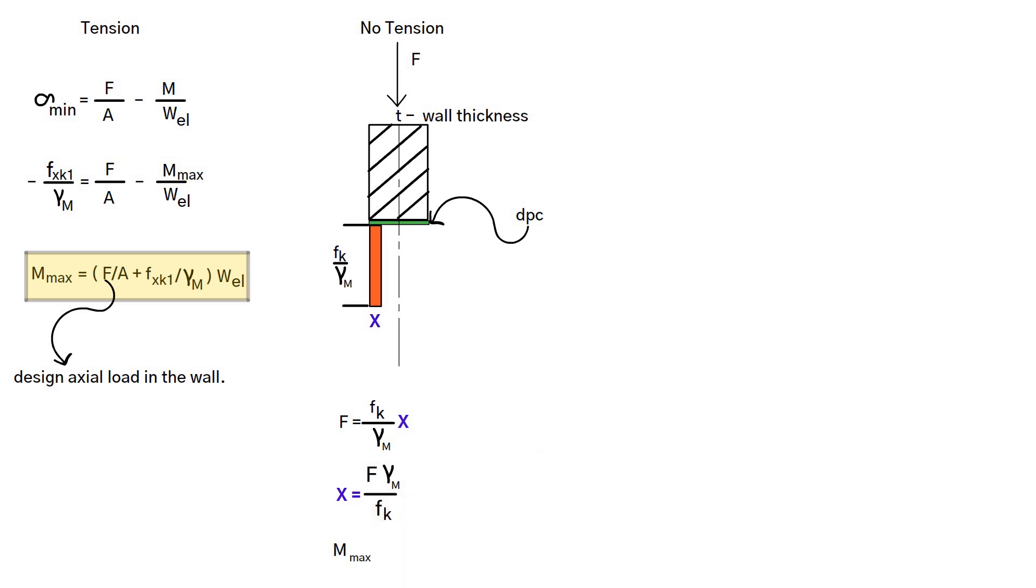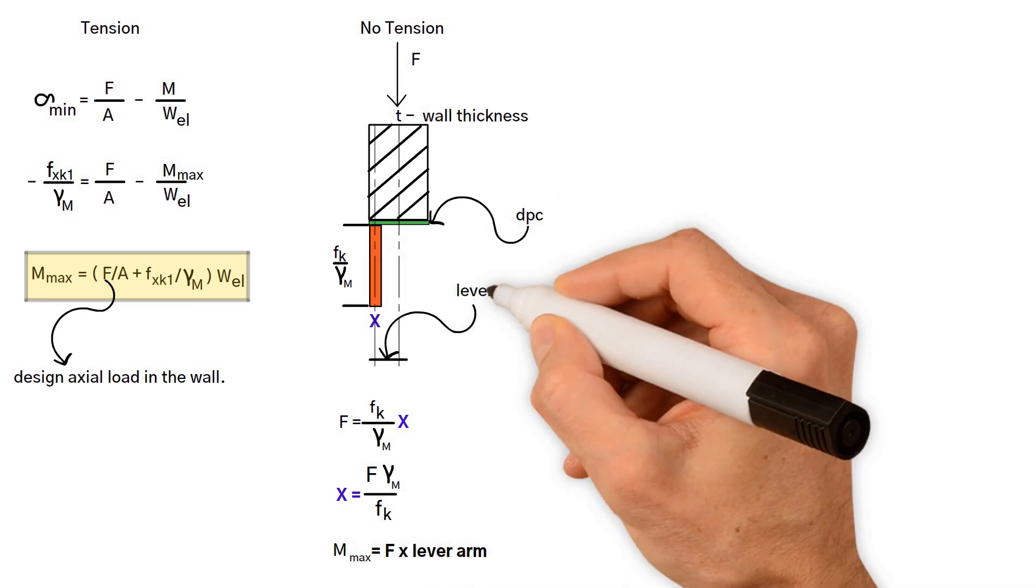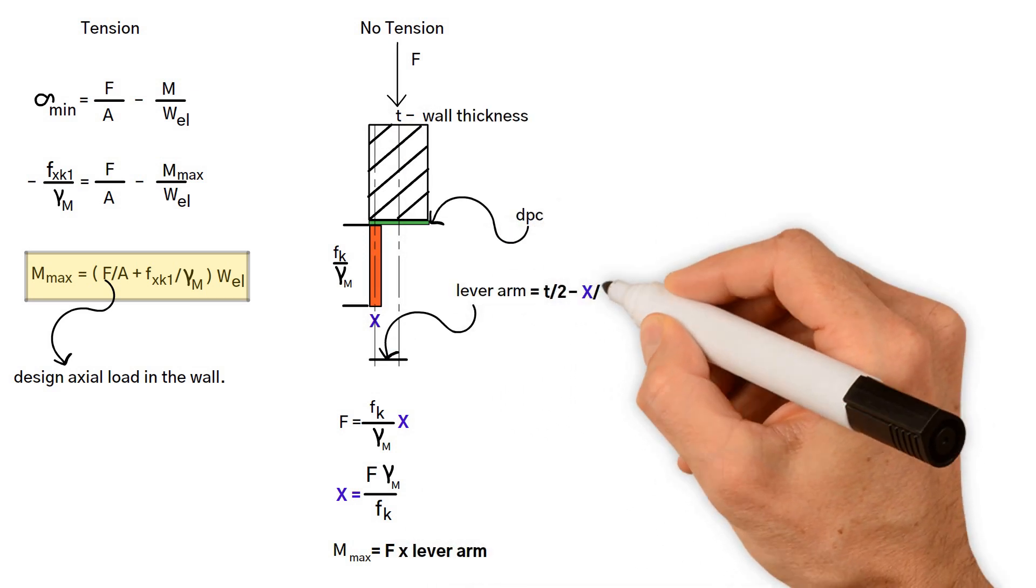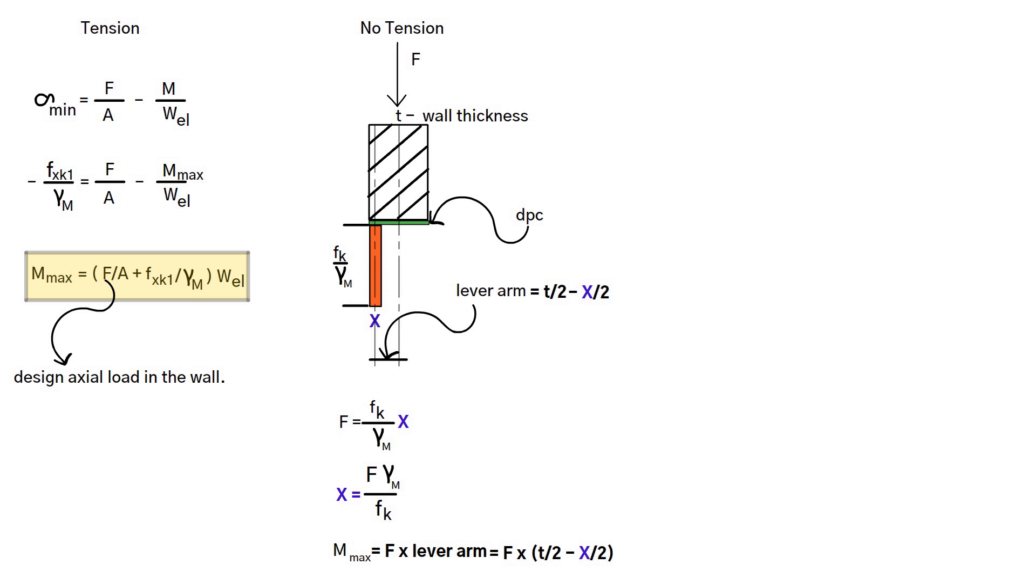The maximum moment is equal to the vertical force F multiplied by the lever arm, where the lever arm is equal to half the wall thickness minus half X. As a result, when X is substituted, the maximum moment is equal to the following.